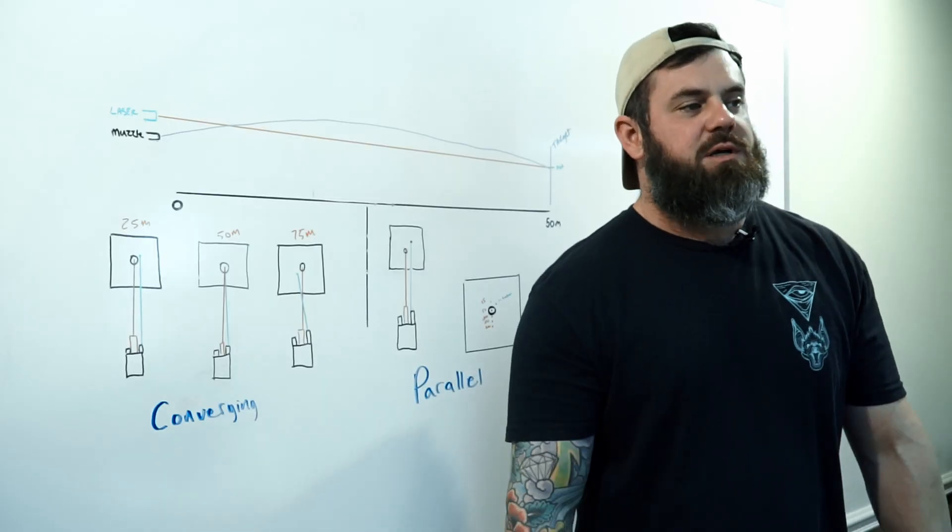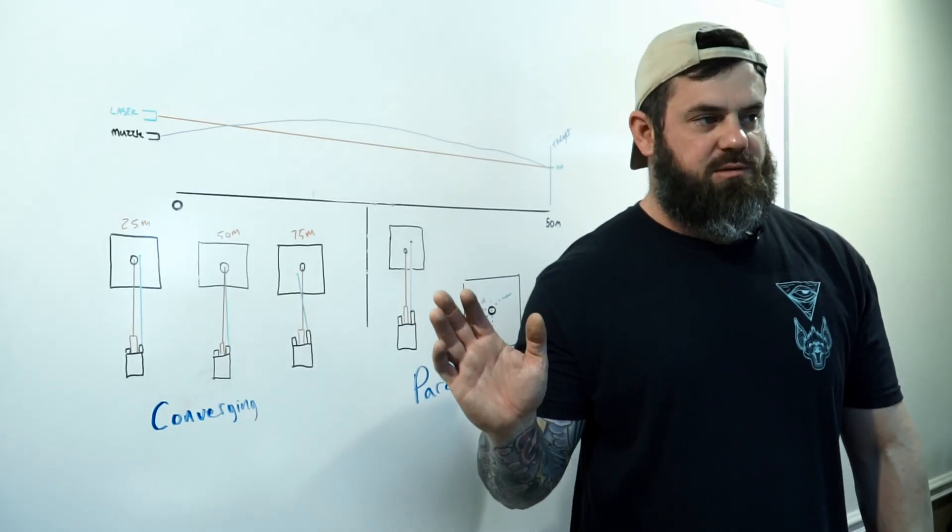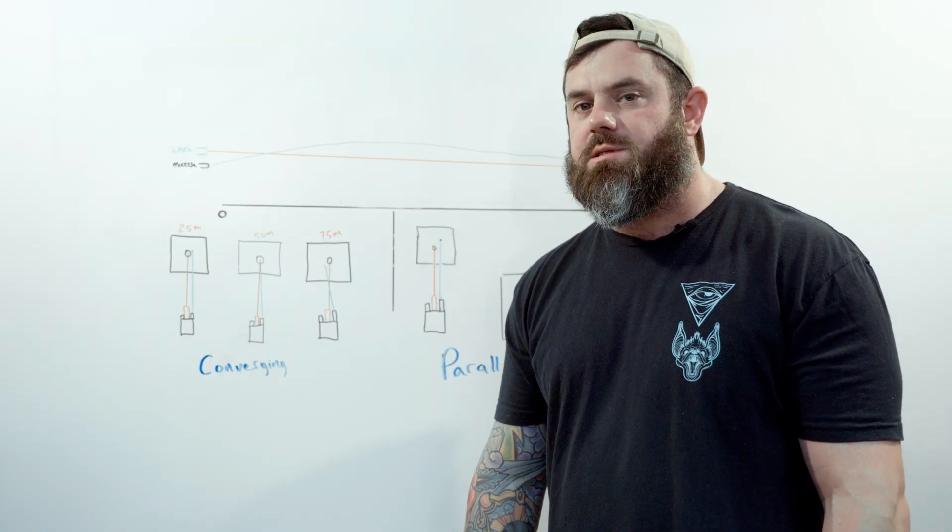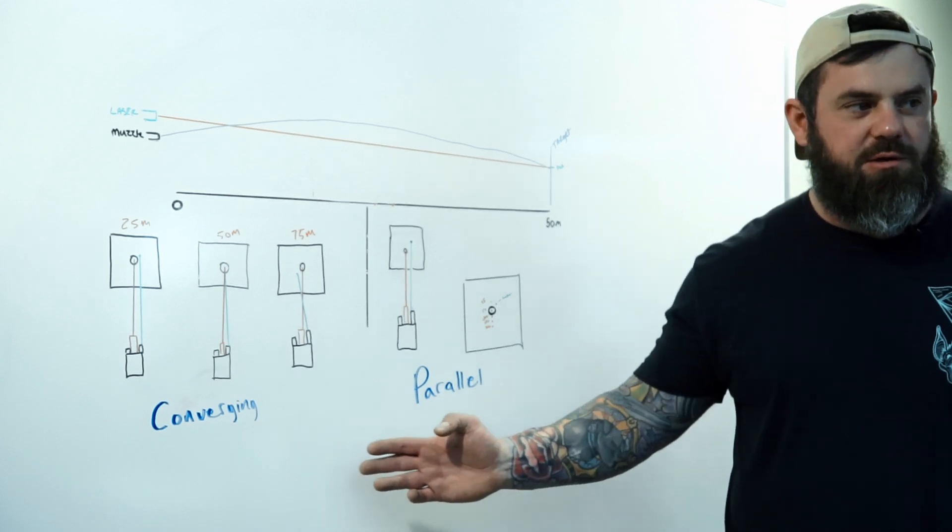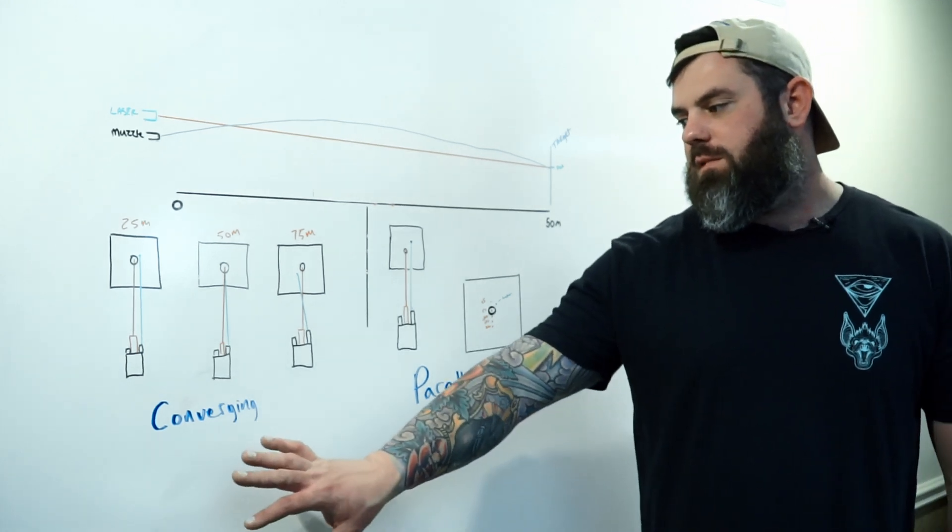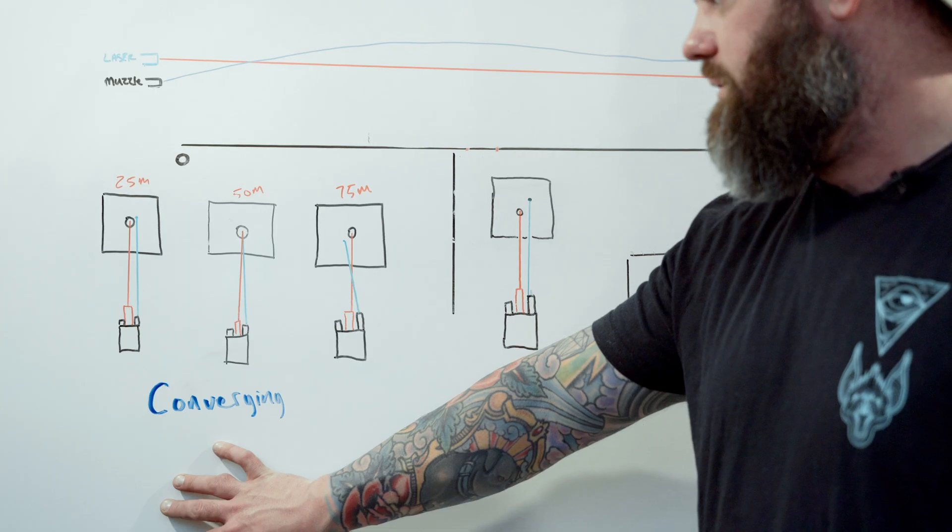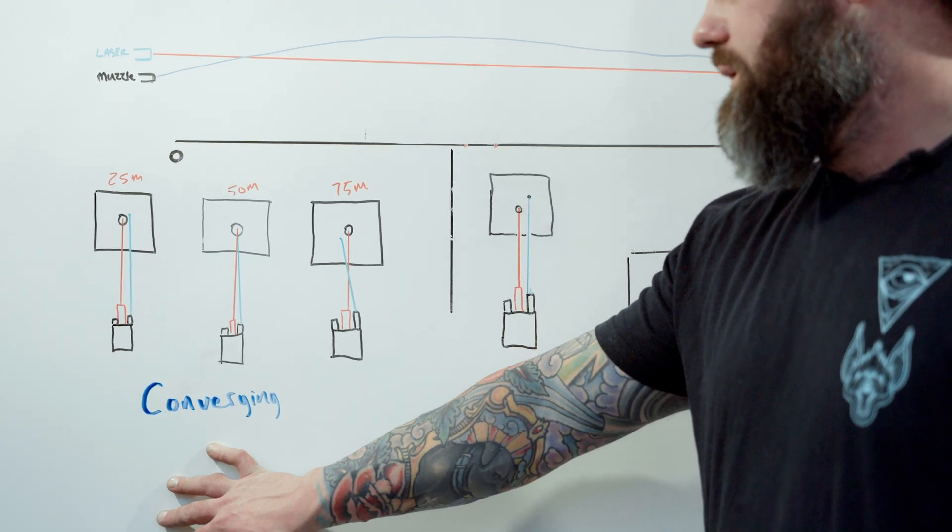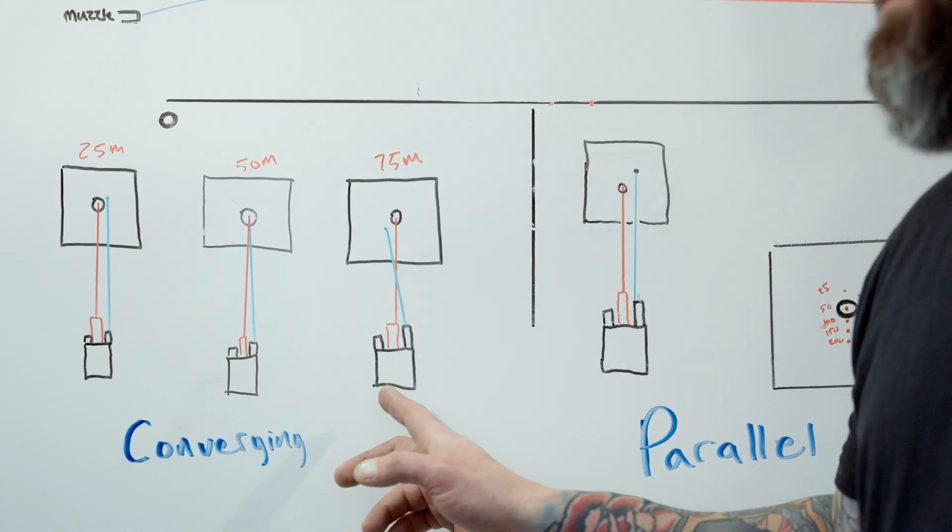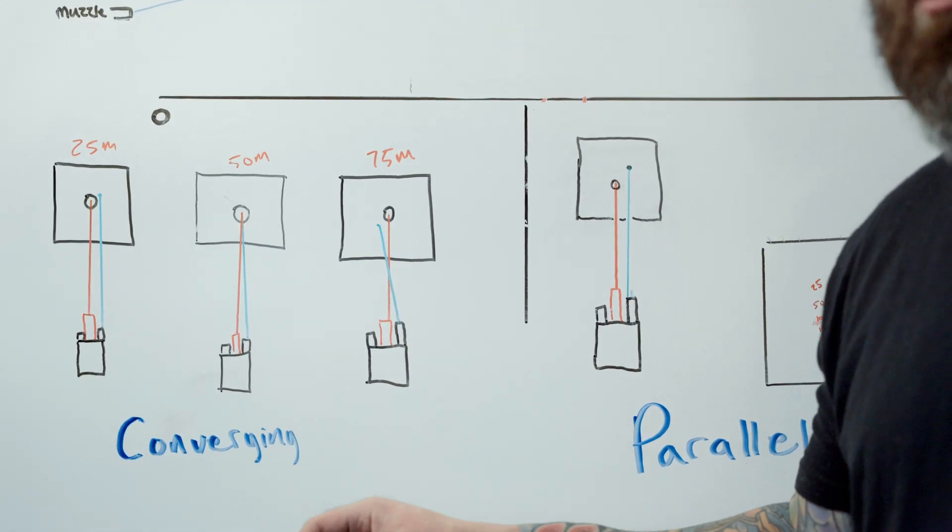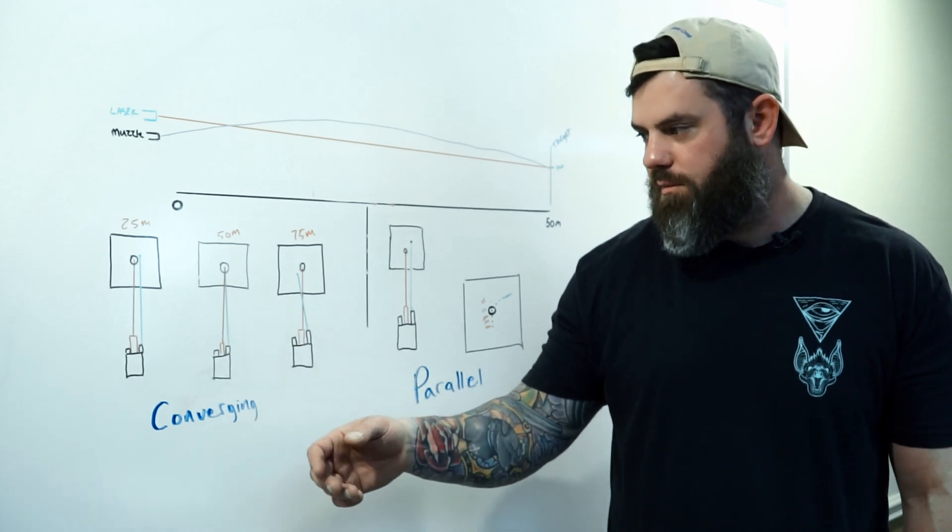To illustrate the difference between a parallel and converging zero, I did some pretty terrible diagrams here, but I think it will get the job done. This is an example of a 50 meter converging zero. This black box with the two diodes coming out of it is a laser, you know, call it a DBAL or a PEQ-15 or whatever, they all kind of look the same.